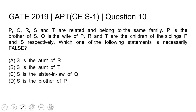The question is: P, Q, R, S, and T are related and belong to the same family. P is the brother of S, Q is the wife of P, and R and T are the children of the siblings P and S respectively. Which one of the following statements is necessarily false?